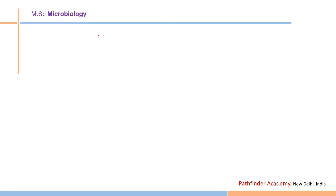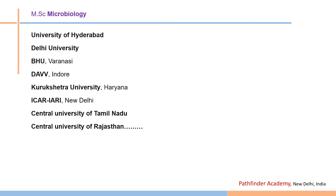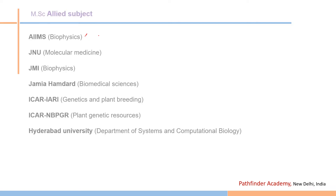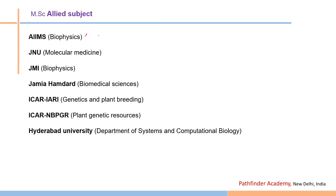Similarly, you will find options for MSc Microbiology. Listed institutions in random order include University of Hyderabad, Delhi University, BHU, Kurukshetra University, Central University of Rajasthan, and Central University of Tamil Nadu. Apart from biotechnology, microbiology, and biochemistry, you also have options in allied subjects.